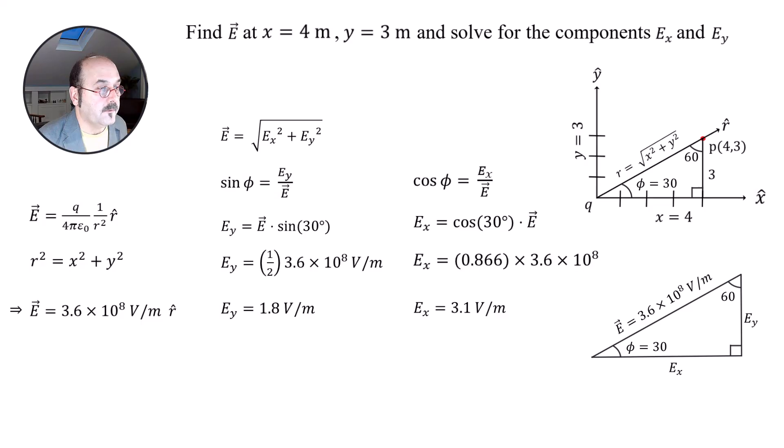And with that, we now have everything we asked for. We solved for the electric field as a vector in this box here. I'm showing it in the R hat convention. And then we also broke it down to its individual constituent components, E_Y and E_X.